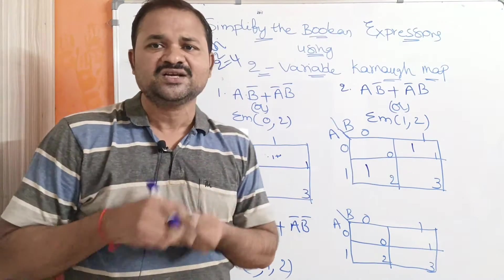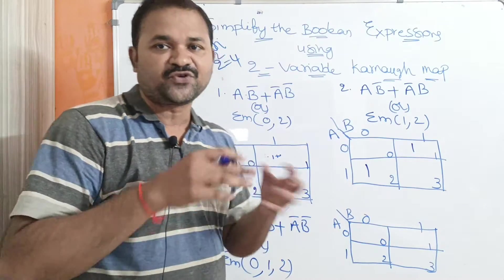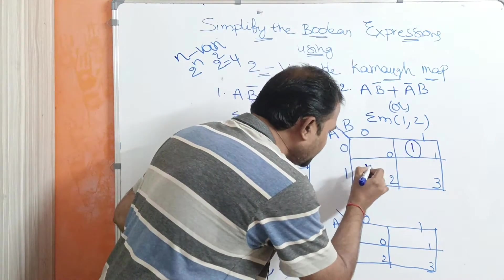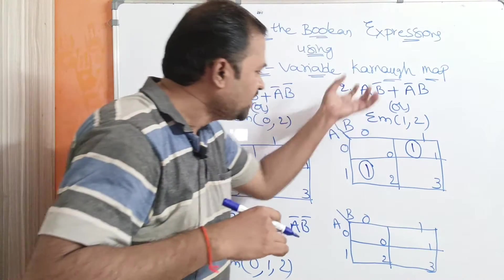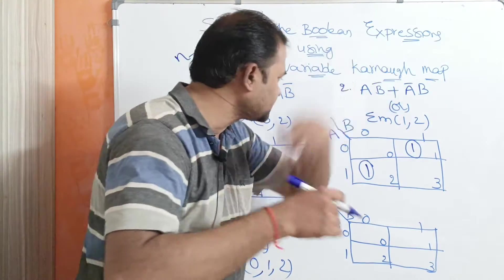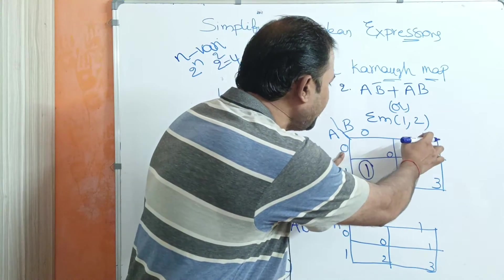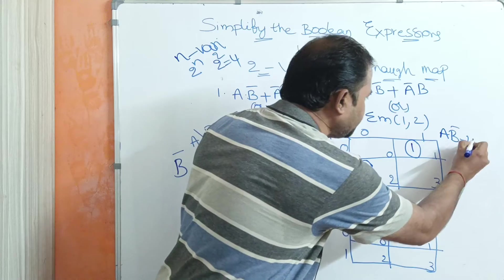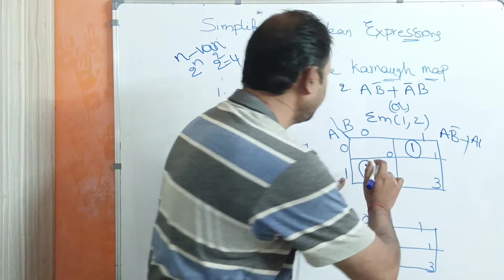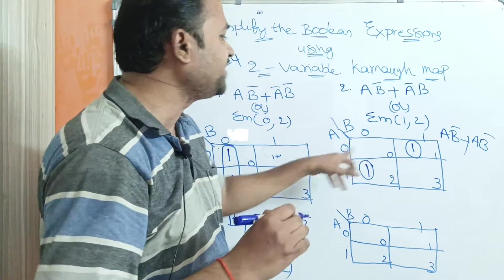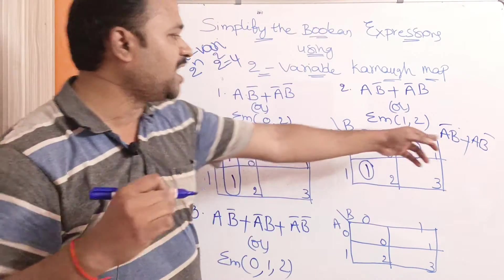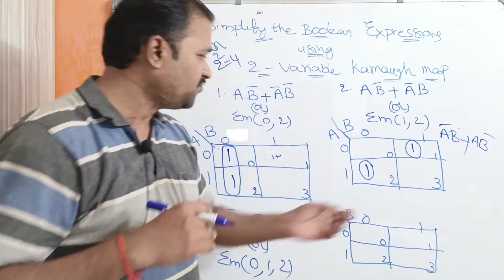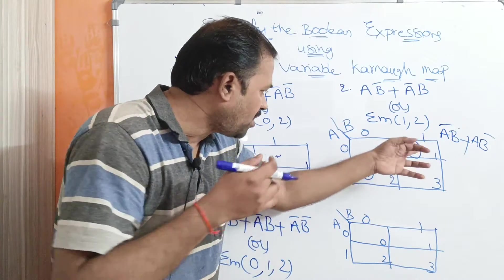These two cells appear in a diagonal position, so there is no need to form them as a pair — we must group them separately. We cannot further simplify this expression. Observing each cell individually: one cell has a equals 0 and b equals 1, giving āb; the other has a equals 1 and b equals 0, giving ab̄. So the result is āb + ab̄, which is the original expression — it cannot be simplified.